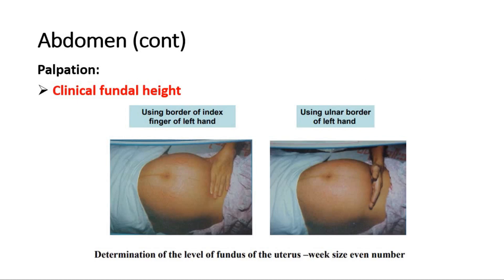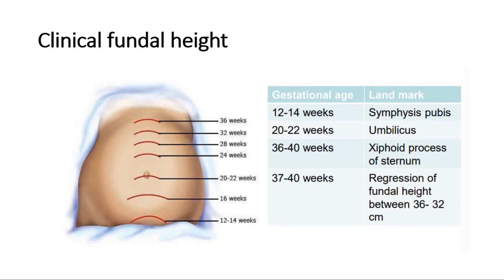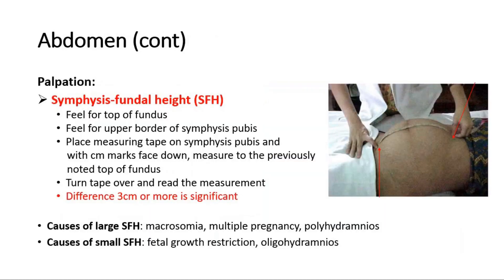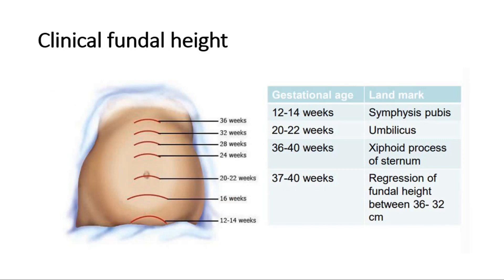Next we move to palpation of the abdomen. First, palpate for the clinical fundal height using the border of the index finger or the ulnar border of the hand. This step determines the level of the fundus of the uterus. The area around the umbilicus corresponds to around 20 to 22 weeks of gestation, increasing by 4 weeks as you move upward — 24, 28, 32, and 36 weeks at the area around the xiphisternum. The clinical fundal height is expressed in even numbers, with the unit being weeks of gestational age.